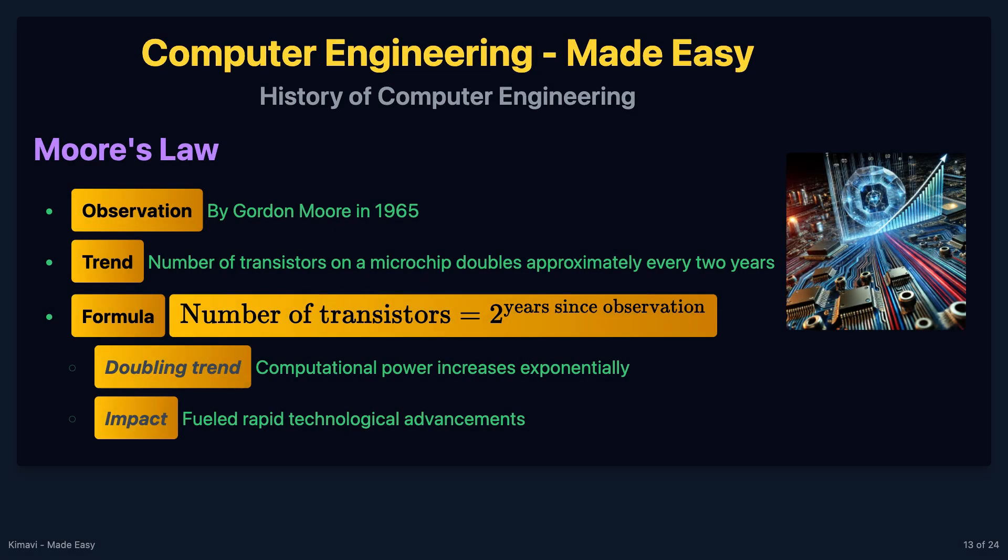In 1965, Gordon Moore observed that the number of transistors on a microchip doubles approximately every two years, leading to exponential growth in computing power. This observation, known as Moore's Law, has guided the semiconductor industry for decades. The formula can be expressed as: the number of transistors is proportional to 2 raised to the power of the number of years.